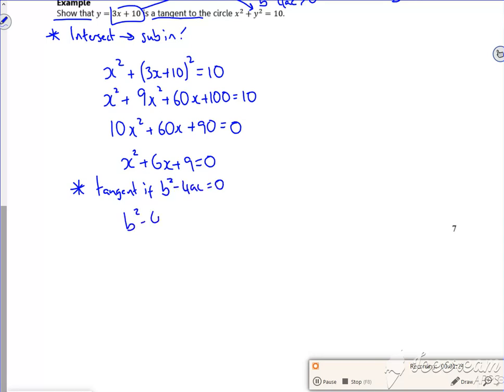So let's work out a value for b squared minus 4ac. So that would be 6 squared minus 4 times 1 times 9. So that's going to be 36 take 36, zero.